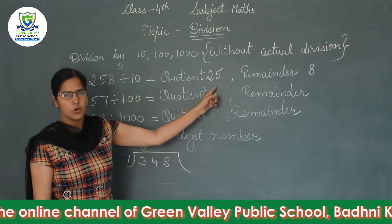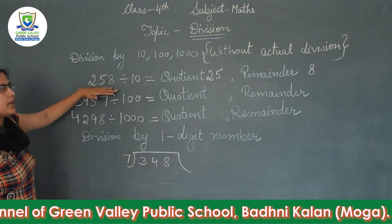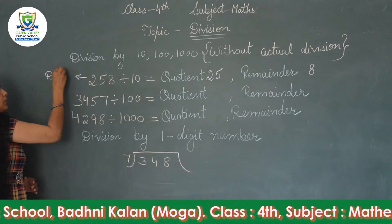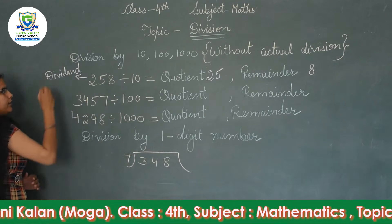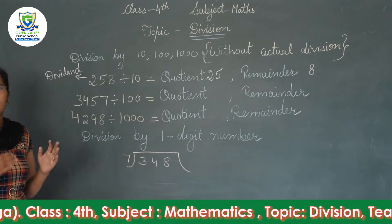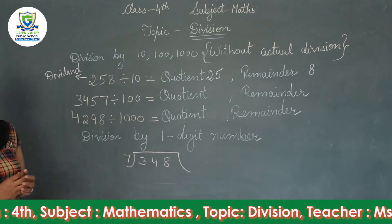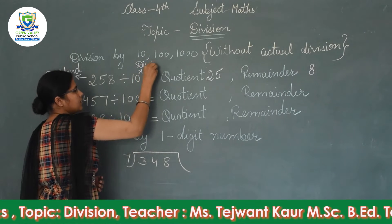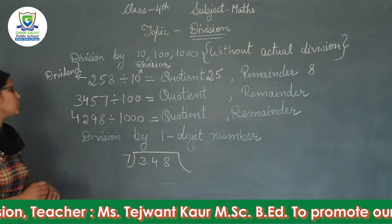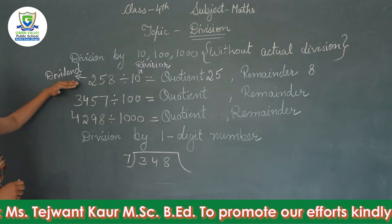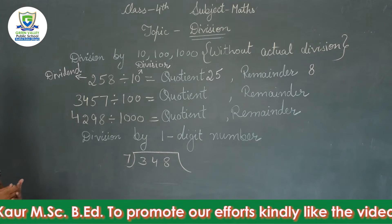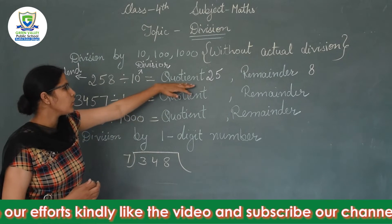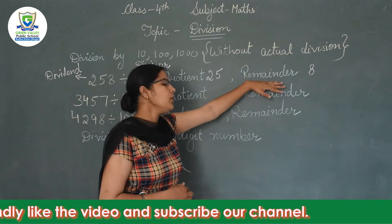The answer of a division is called the quotient. The number which we are going to divide is called the dividend. The number by which we divide is called the divisor. The answer is called the quotient, and what is left over is called the remainder.